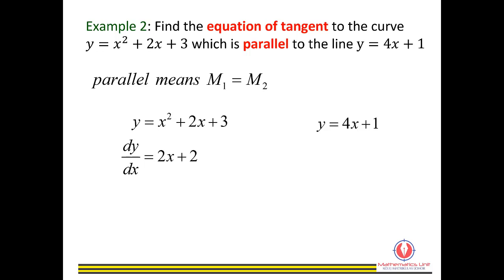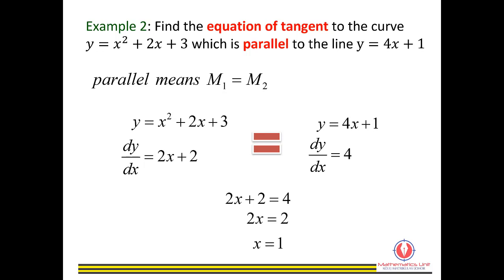Then you have the second equation, y equals 4x plus 1. Differentiate this, you will get 4. This is m2. Since they are parallel, meaning their gradients are equal. So we equate 2x plus 2 equals to 4. Rearrange this, you will get x equals to 1.